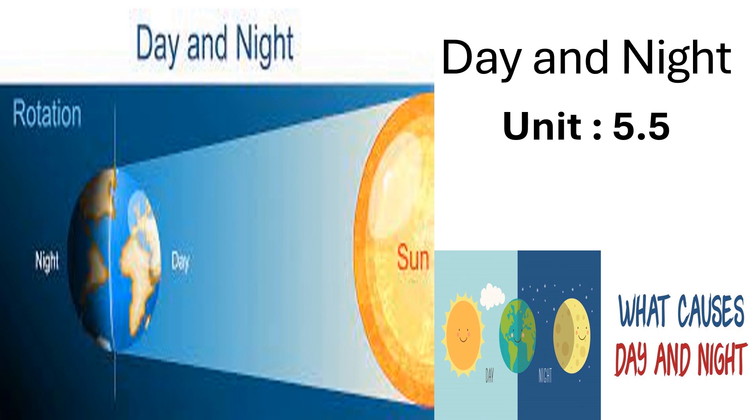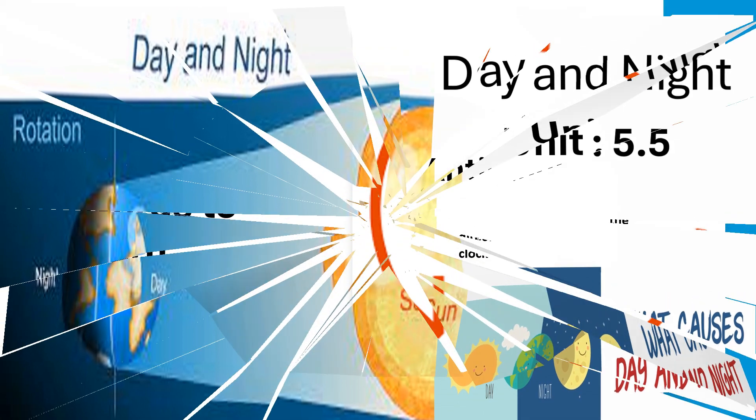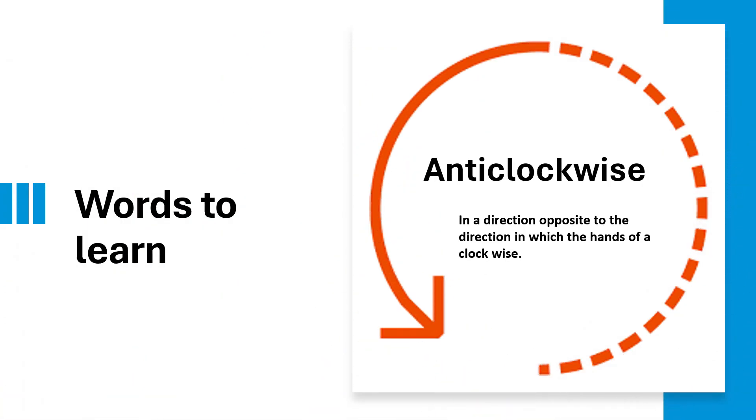Day and Night. Words to learn: Anticlockwise means a direction opposite to the direction in which the hands of a clock move.